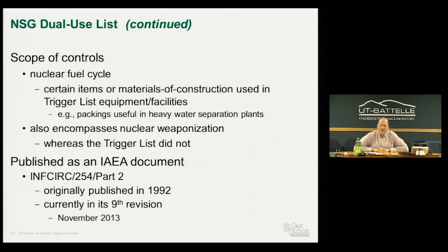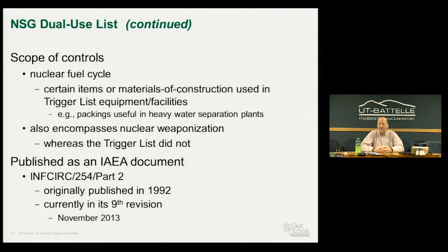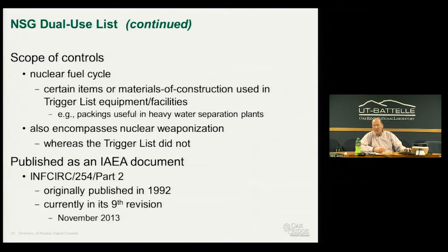The dual-use list has different restrictions from the Trigger List: it restricts exports to activities related to nuclear explosive programs or unsafeguarded nuclear fuel facilities, but does not require safeguards for non-fuel cycle facilities like automotive plants. Importantly, the scope of the dual-use list broadens to capture weaponization activities that the Trigger List does not cover—going beyond metal production to subsequent steps. The IAEA publishes this as Part 2, first published in 1992, now in its 9th revision.